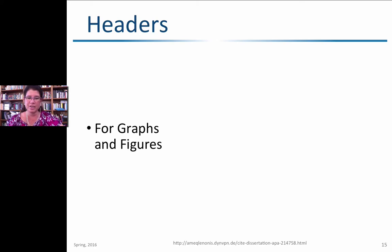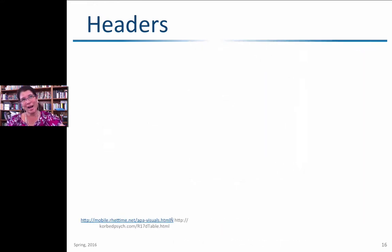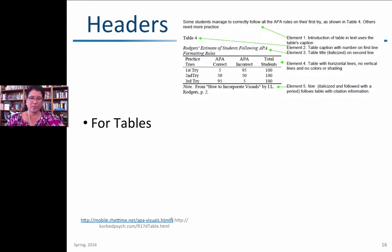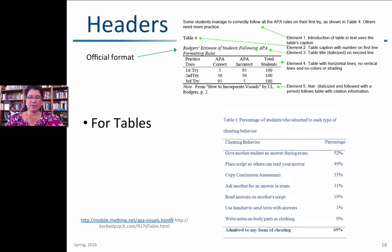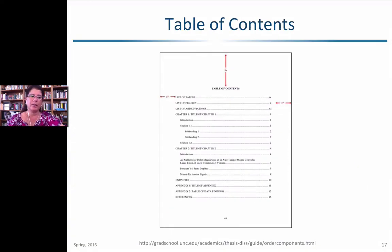Headers are used not just for sections but also for inserts like figures and graphs. Figures and graphs are cited underneath in italics, while table headers go on top and are not in italics. Tables are numbered, and below that you indicate the title. By creating headers, you're able to automatically generate a table of contents in Word — if you embed the table title in the header, it appears in the table of contents rather than just 'Table 1, 2, 3.'